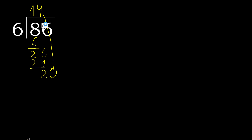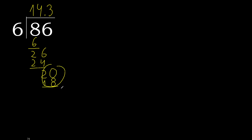So we have 20. 6 multiplied by 4 is greater. 6 multiplied by 3 is 18. Subtract. Complete — place a 0 again. The decimal point is here.